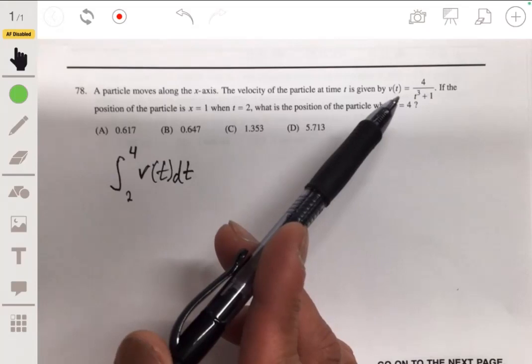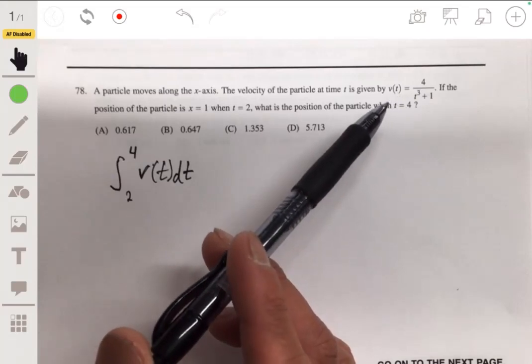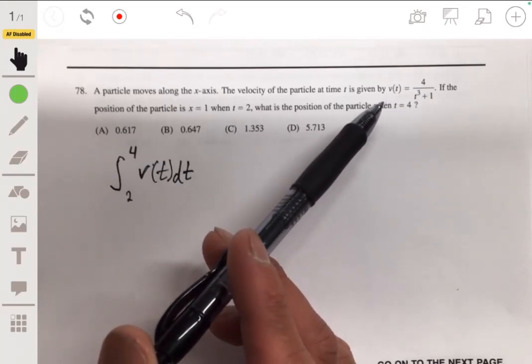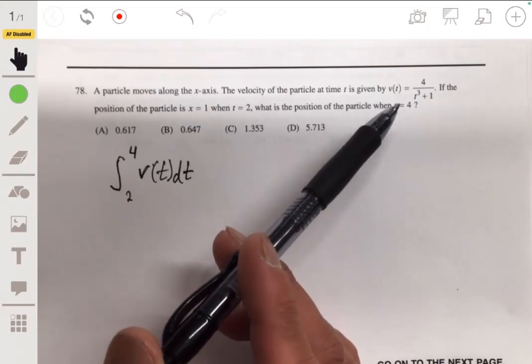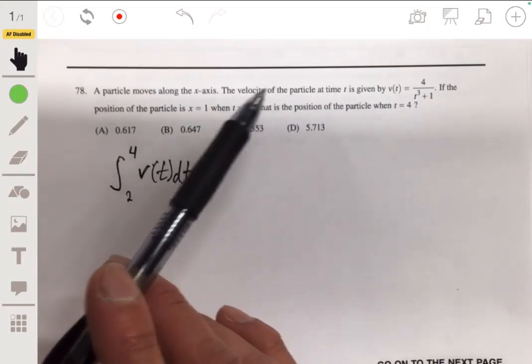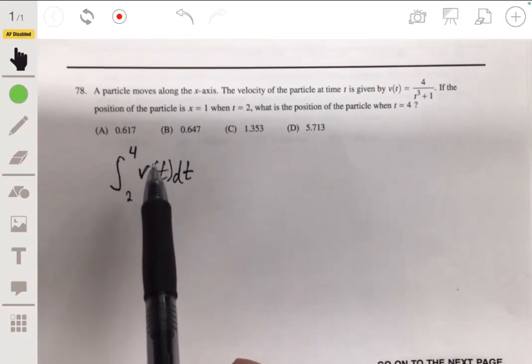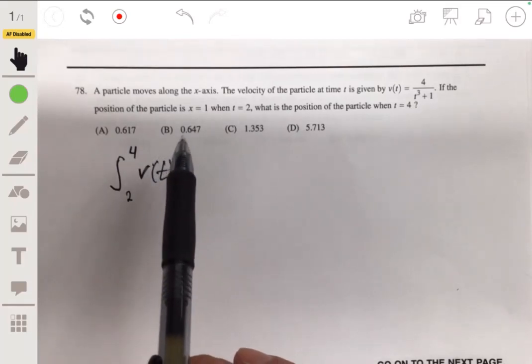We can simply use our graphing calculator and plug this in. I'm thinking there's another way to do it. I mean, this would be s of four minus s of two, but we don't have those really.